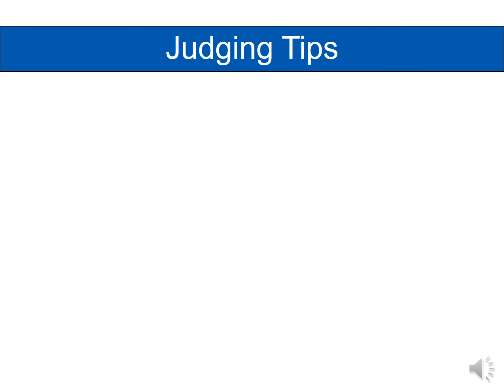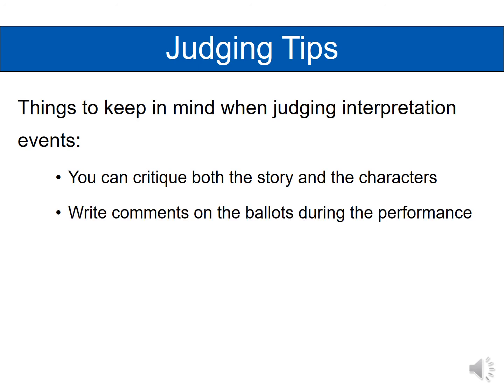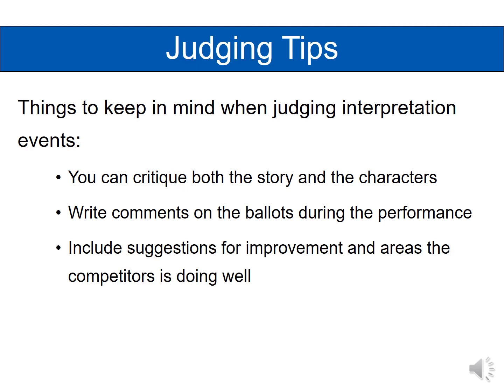Here are some judging tips to keep in mind for all six event categories. First, you can critique both the story and the characters — does the storyline or theme make sense, how do the characters play, do they fit that story or theme, are they consistent? You'll want to write your comments on the ballots during the performance, because of time constraints you won't have time to write at the end of the round, and you want to capture comments as you think of them. Also balance your feedback — give critiques so students know what to improve, but also some encouragement so they don't feel completely torn down.